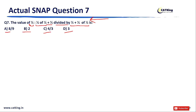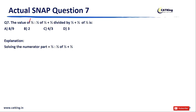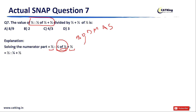Let me solve the numerator: 1/2 : (1/2 of 1/2 + 1/2). As per BODMAS, 'of' is solved first — 1/2 of 1/2 = 1/4. So we have 1/2 : (1/4 + 1/2) = 1/2 : 3/4. Solving this ratio gives 2/3. So the numerator equals 2/3.